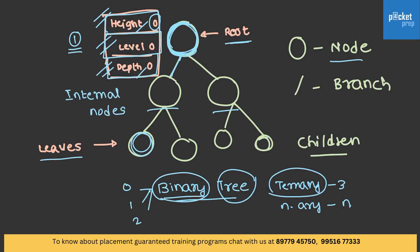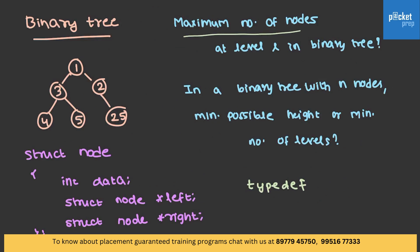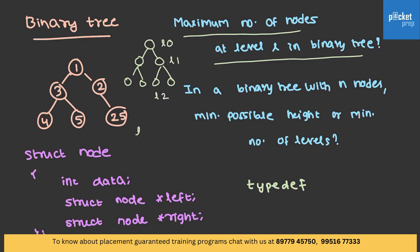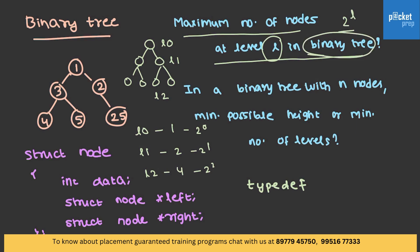Let's see some basic questions that can be asked in trees. Consider this question: maximum number of nodes at level L in a binary tree. For solving these types of questions, you can take an example. At level 0 I have 1 node, at level 1 I have 2, at level 2 I have 4 nodes — which are 2 power 0, 2 power 1, and 2 power 2. So at level L, we have 2 power L maximum number of nodes in a binary tree. You can take an example and solve it very easily.